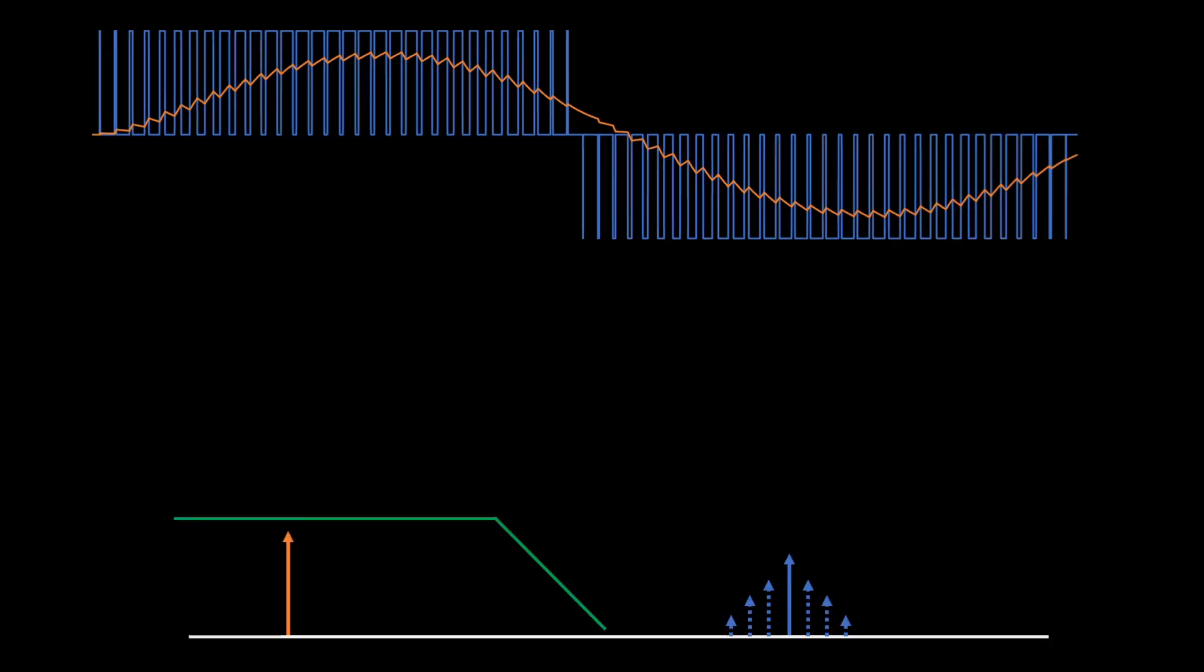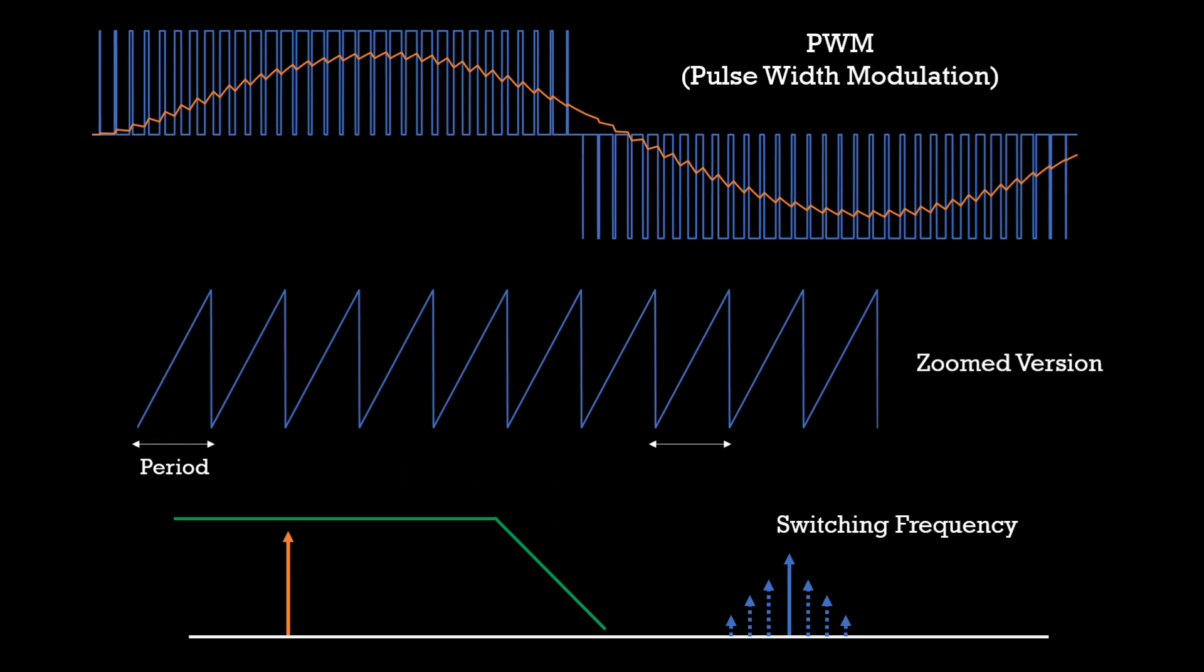Now, let us introduce the terms that engineers generally use. Since this waveform is switching, the frequency is also called the switching frequency. Also, these switching waveforms are called PWM, Pulse Width Modulation. We should observe that the frequency of the pulse is constant but what changes is the duty cycle or the width of these pulses. Hence, the name Pulse Width Modulation.